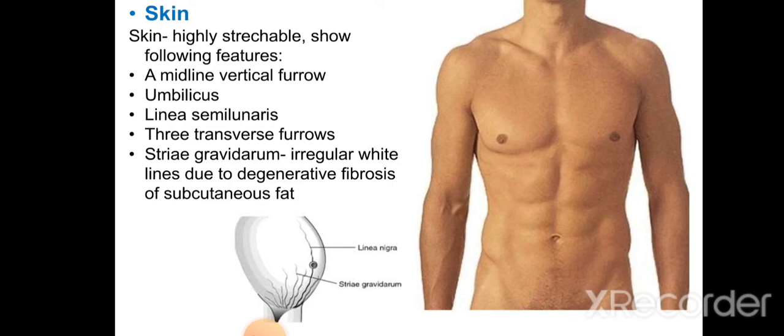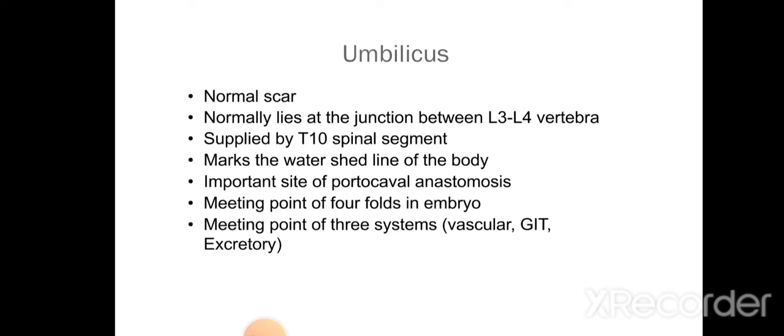Striae gravidarum are irregular white lines due to degeneration and fibrosis of subcutaneous fat, found only in multiparous women. The umbilicus is a normal scar that normally lies at the level of the intervertebral disc between L3 and L4, and is supplied by the T10 spinal nerve segment. It marks the watershed line of the body and is an important site of portocaval anastomosis, the meeting point of four folds in the embryo and three systems: vascular, GIT, and excretory.